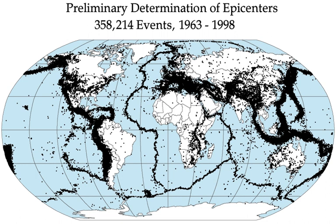An aftershock is an earthquake that occurs after a previous earthquake — the mainshock. An aftershock is in the same region of the mainshock but always of a smaller magnitude. If an aftershock is larger than the mainshock, the aftershock is re-designated as the mainshock and the original mainshock is re-designated as a foreshock. Aftershocks are formed as the crust around the displaced fault plane adjusts to the effects of the mainshock.